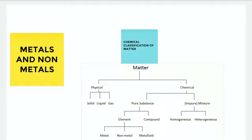In 9th class, you have learned about the chemical classification of matter. Matter is chemically classified into two types: pure substances and mixtures. Pure substances we can again classify into element and compound. Elements are of three types: metals, non-metals, and metalloids. So metals and non-metals are coming under the classification of elements, which are a type of pure substance.